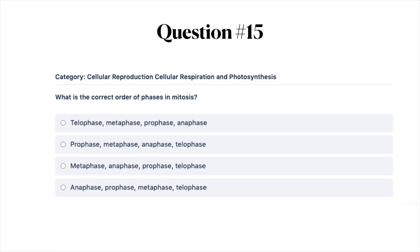Next question: what is the correct order of phases in mitosis? A, telophase, metaphase, prophase, and anaphase; B, prophase, metaphase, anaphase, telophase; C, metaphase, anaphase, prophase, telophase; or D, anaphase, prophase, metaphase, telophase.